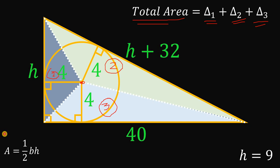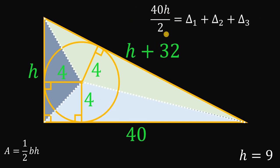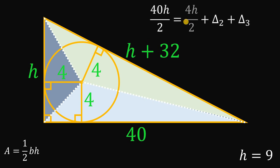We use the concept that the total area of the big triangle equals the sum of the three smaller triangles. The area formula is one-half times base times height. The total area of the big triangle is one-half times 40 times h, giving us 40h over 2. The area of the first triangle has base h and height 4, giving us 4h over 2.